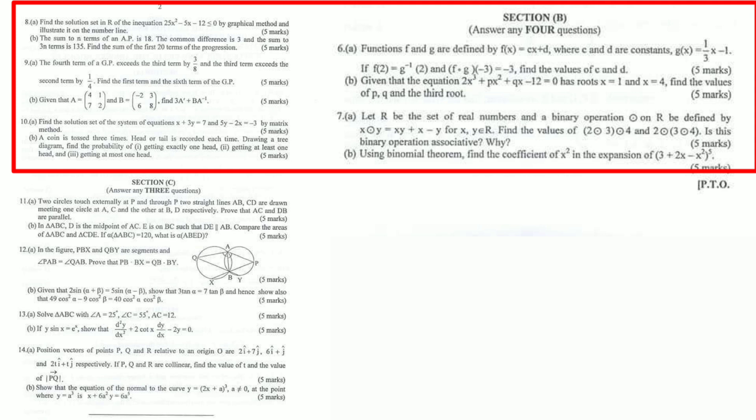The marking scheme for Section B shows the distribution of marks. You need to focus on the relevant chapters and answer accordingly. The total marks are clearly indicated on the paper.